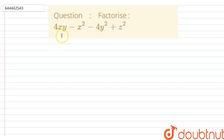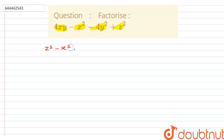In this question we have to factorize this. We have 4xy minus of x square minus 4y square plus z square. First we can write this equation as: z square, minus x square, minus 4y square, plus 4xy.